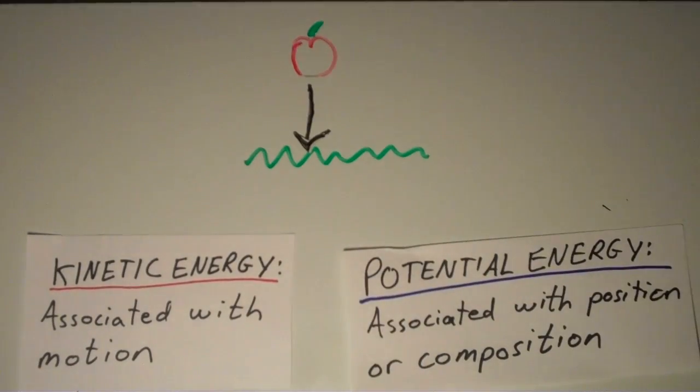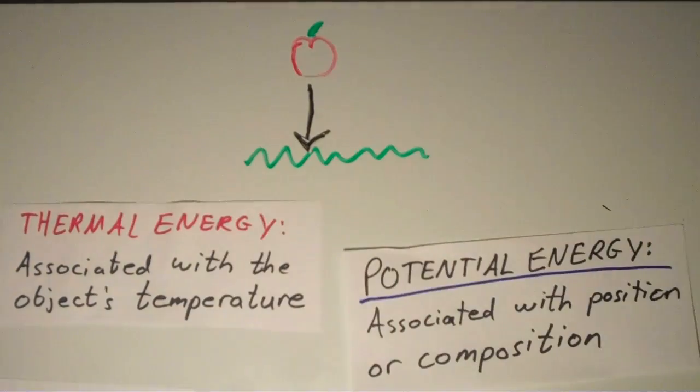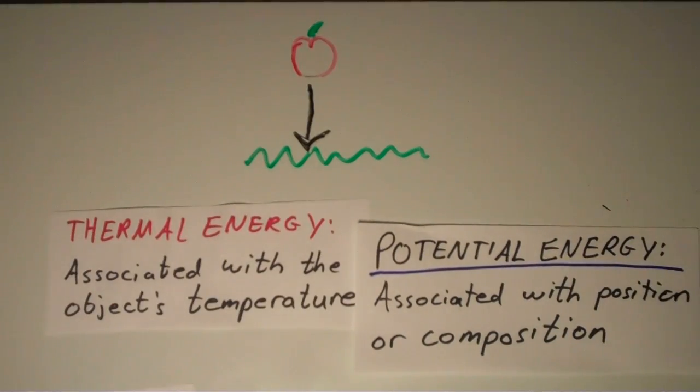When the apple hits the ground, the energy given off is primarily in the form of thermal energy. Thermal energy is the energy associated with an object's temperature. So, thermal energy is actually a type of kinetic energy, because the temperature of an object has to do with the motion of its atoms or molecules that make up the object.